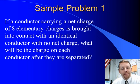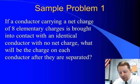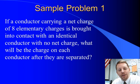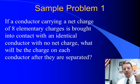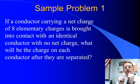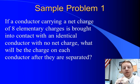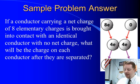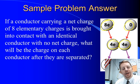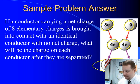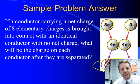Sample problem: if a conductor carrying a net charge of eight elementary charges is brought into contact with an identical conductor with no net charge, what will be the charge on each conductor after they're separated? If you have eight charges on one and zero on the other, you bring them into contact — in metals, charges are free to flow, so they'll distribute across the two. They'll share, each ending up with four elementary charges. So four elementary charges on each when you're done.